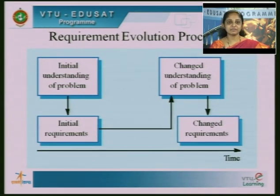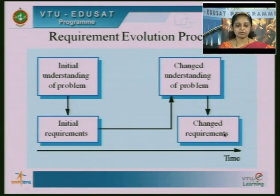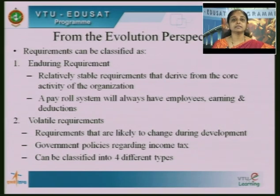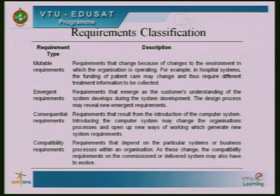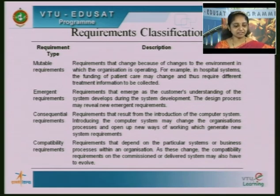We discussed requirements evolution — because requirements change over time due to changed understanding of the problem, we need to incorporate changed requirements. Requirements are classified as enduring requirements (stable, unlikely to change for a long time) and volatile requirements (likely to change during development). Volatile requirements are further classified as mutable, emergent, consequential, and compatibility requirements, based on why they change.